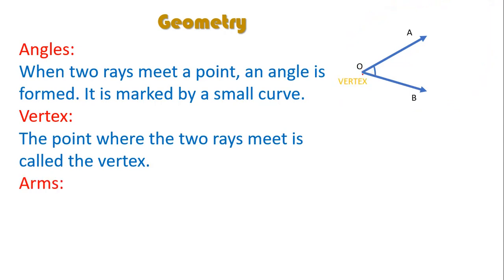Next arms. Rays form the arms of the angle. As you can see here, here is one ray that is OA. Another one is OB. These two rays form the arm.